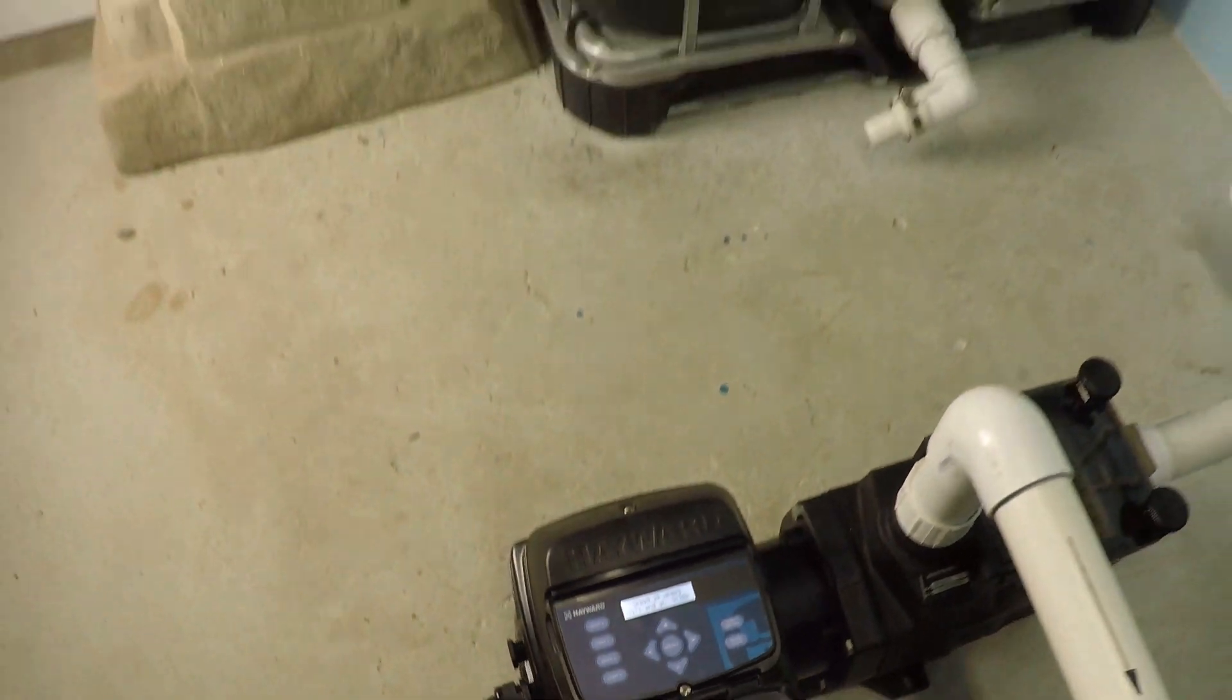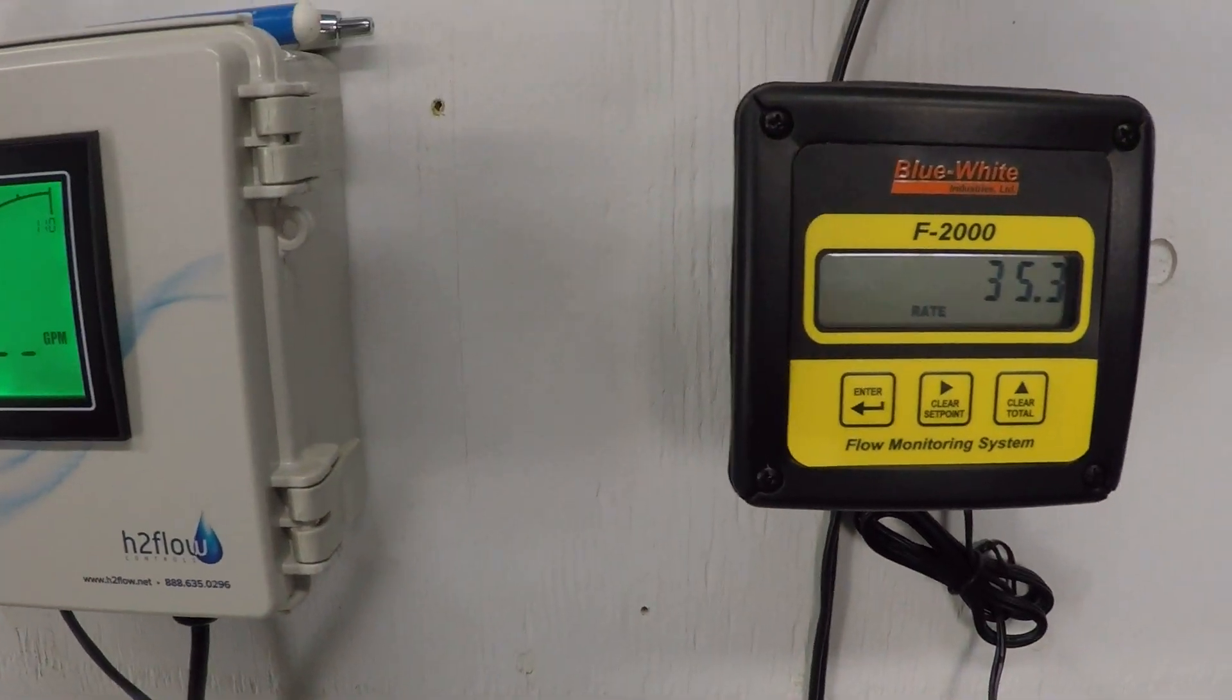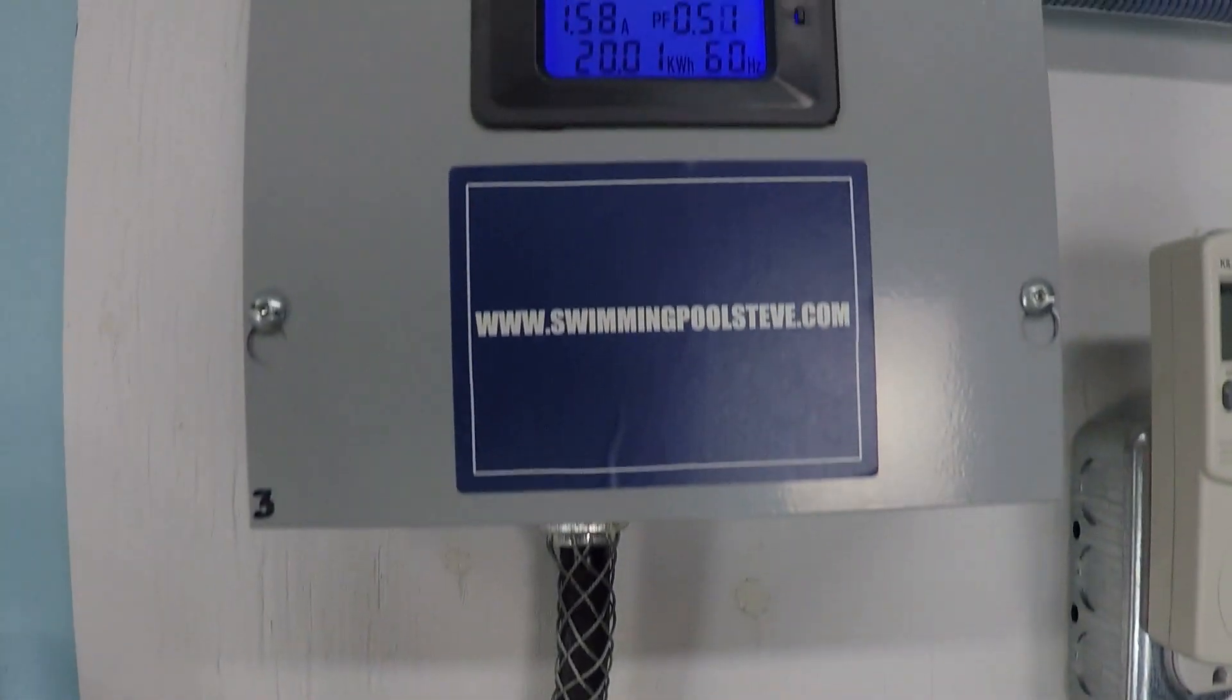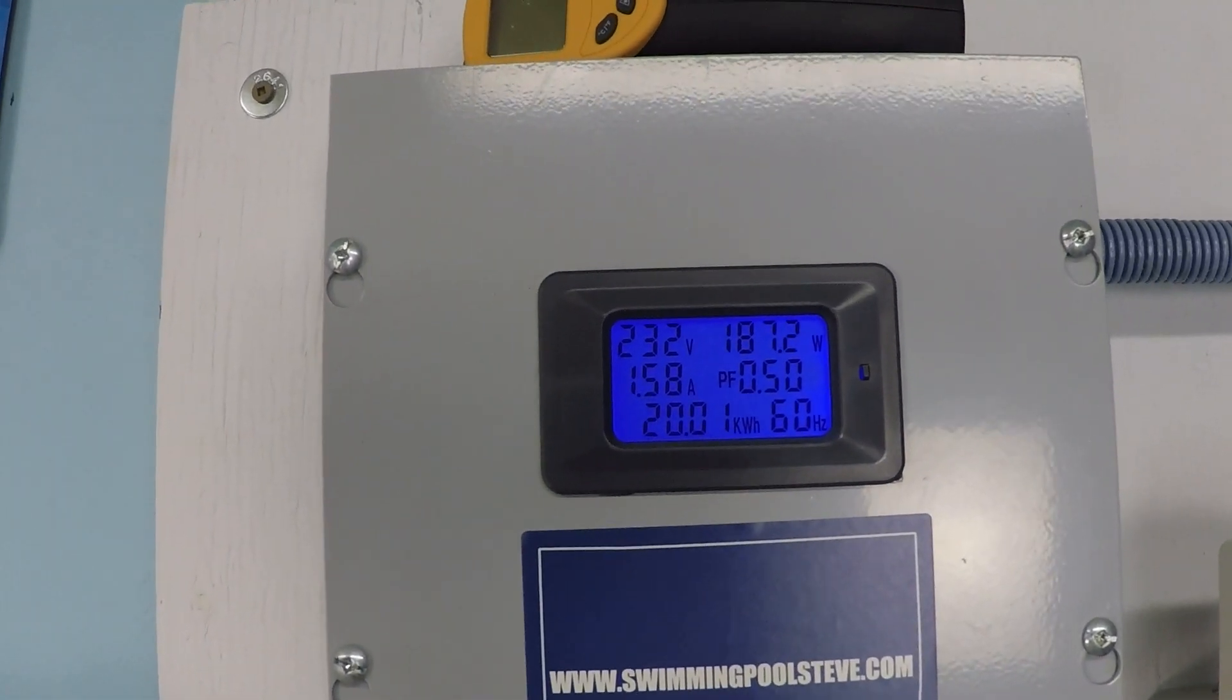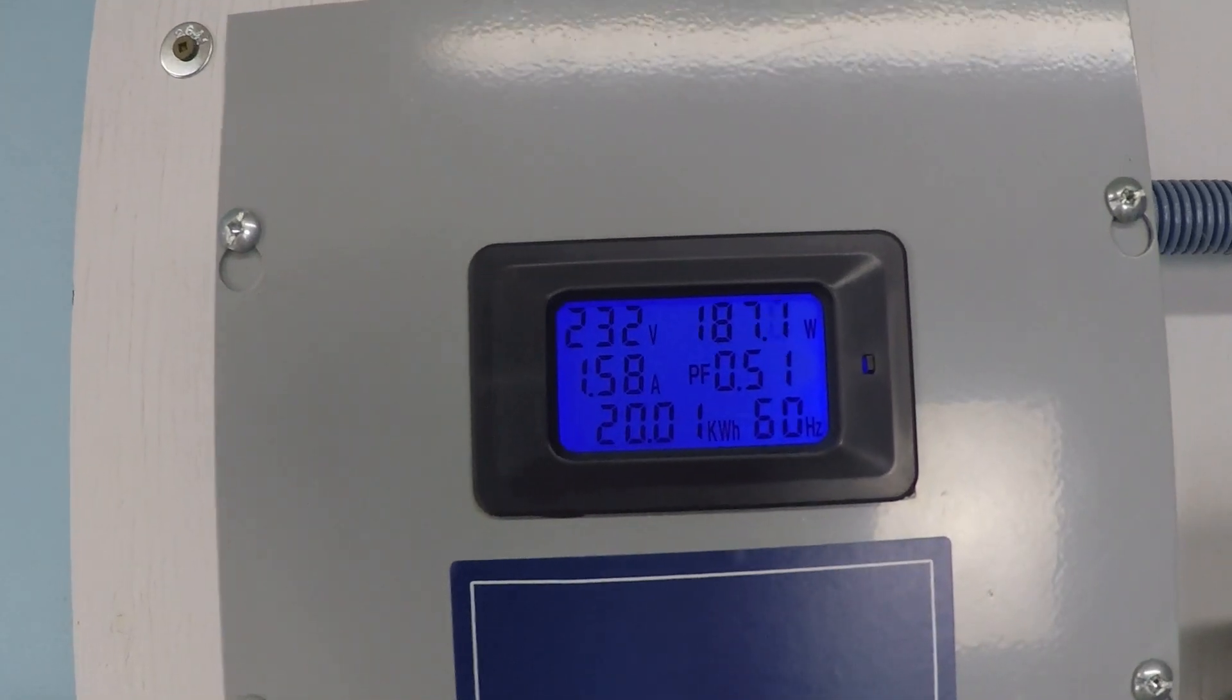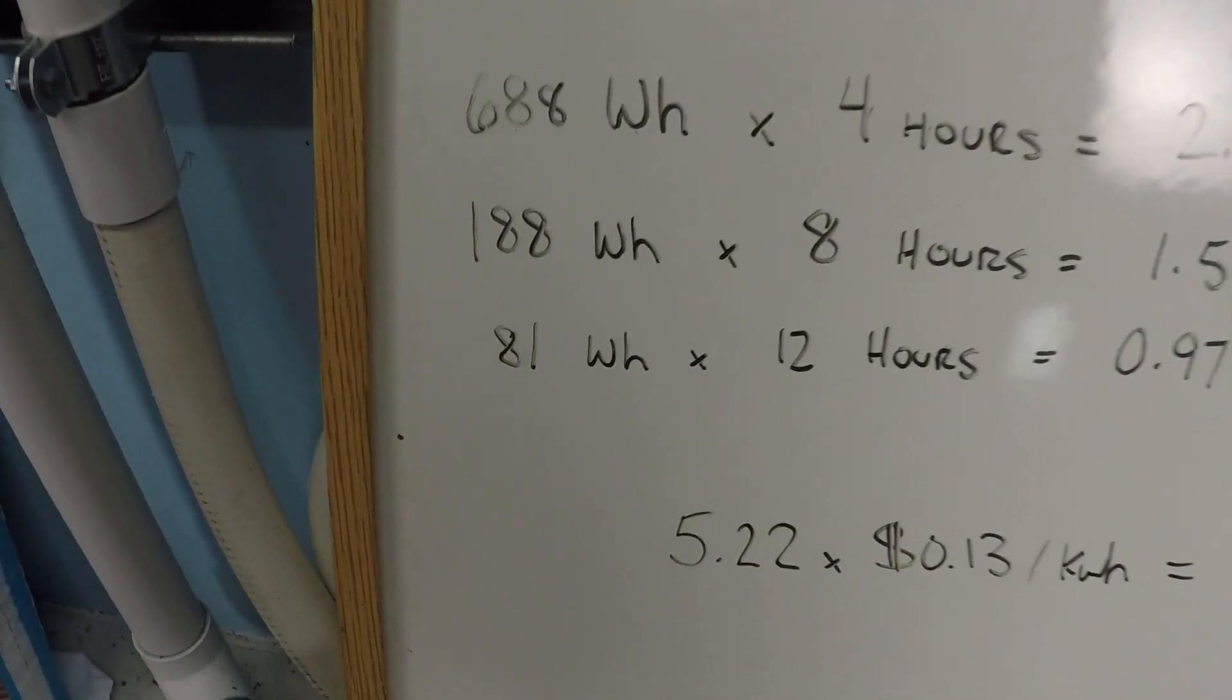All right. Takes just a second for the flow meter to catch up here. We're looking for about 35 and a half gallons per minute. And that's what we see there. Again, top right. We're looking at the wattage. 187 right now. 1.58 amps at 232 volts. A little bit of variance there. I've got it written down here at 188 watts.